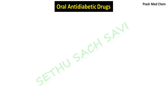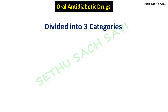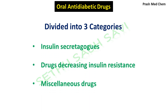Oral anti-diabetic drugs can be broadly classified into three categories based on their mechanism of action: number one, insulin secretagogues; number two, drugs decreasing insulin resistance; and number three, drugs which act by mechanisms different from the first and second, which we include in the miscellaneous category.